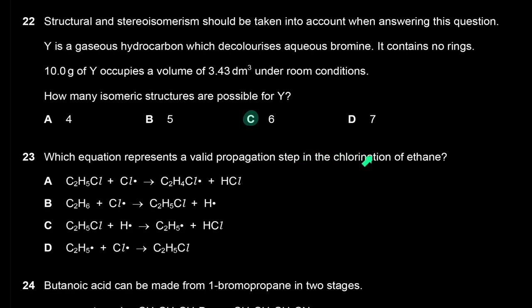Which equation represents a valid propagation step in the chlorination of ethane? Propagation involves a radical and a molecule combining to give another radical and a molecule. Option D is a termination step, so that's ruled out. In free radical substitution, hydrogen radicals never form or react in any propagation step. The answer is A — this is a valid propagation step, representing the second substitution after the first has already taken place.